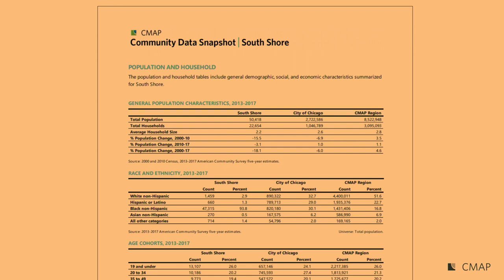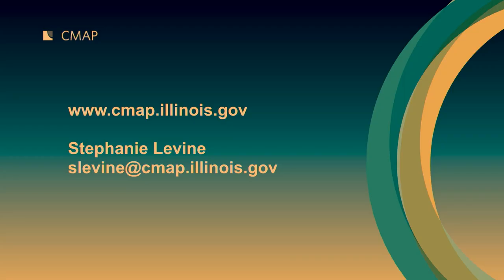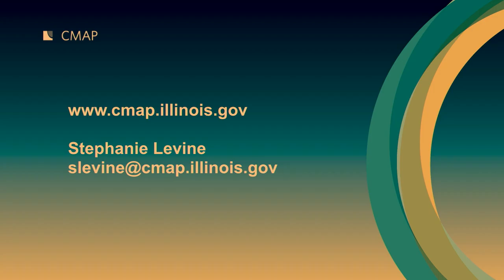I'm excited to answer questions. You can find us at CMAP — lots of links are in the document. We have a weekly newsletter you can sign up for to get updates on policy and new data releases. We're on all platforms including Twitter. Basically, cmap.illinois.gov is where you can find almost anything I talked about today.